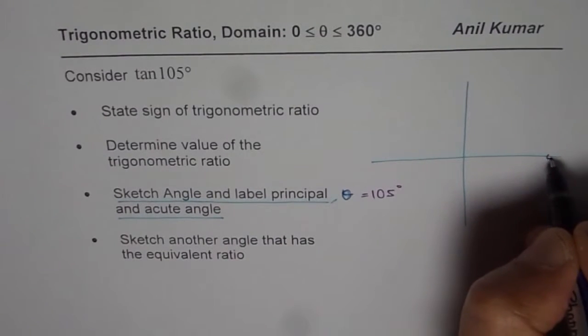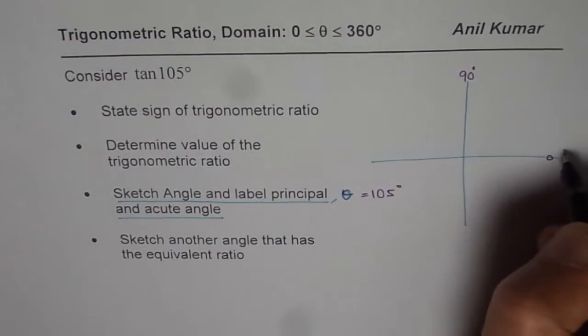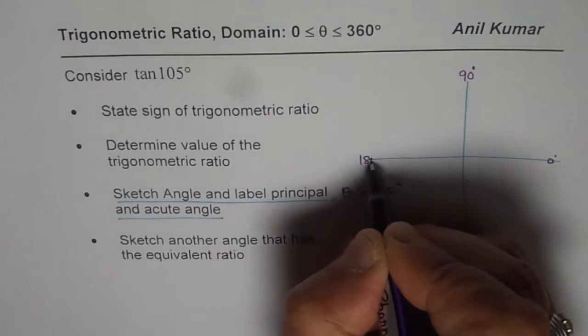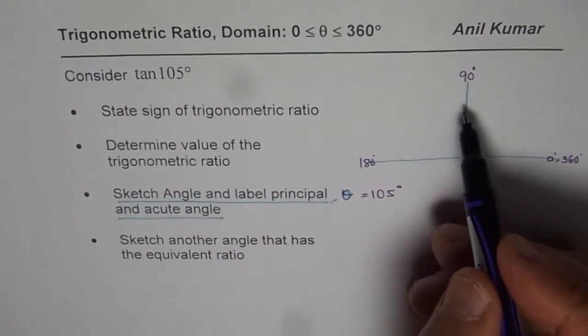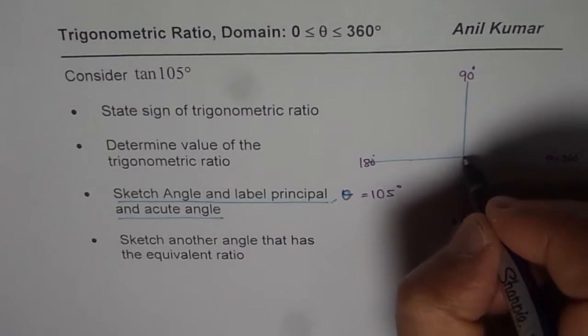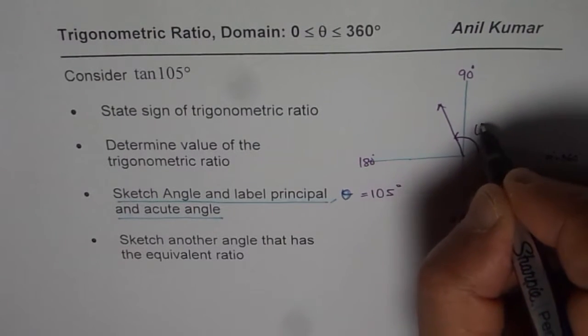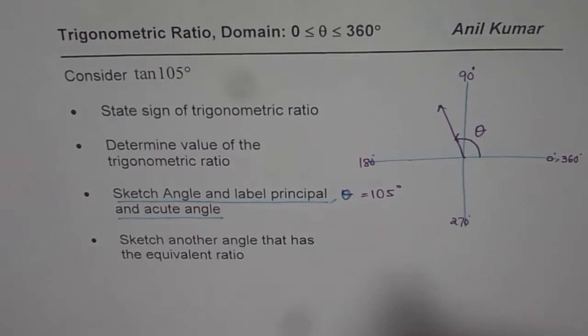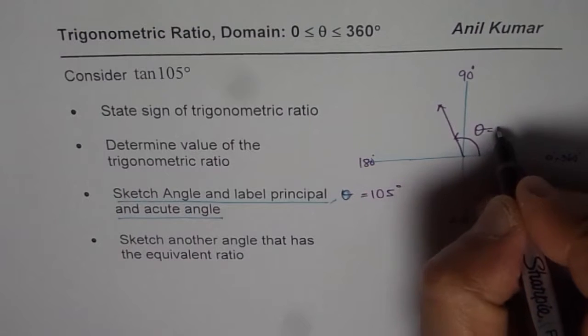Now in a coordinate plane, horizontal x axis going positive is 0 and then we have 90 degrees, 180 degrees and 270 degrees and one full circle is 360 degrees. 105 is more than 90, less than 180. Therefore, the angle is somewhere here, so that is the principal angle theta for us. So that is 105 degrees, principal angle theta equals to 105.